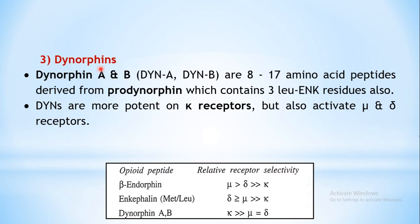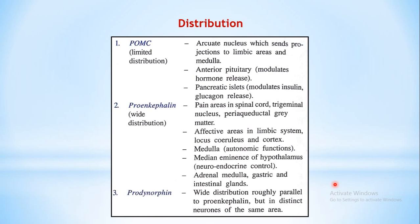The third family is dynorphins. There are two: dynorphin A and dynorphin B. They contain 8 to 17 amino acid peptides and are derived from pro-dynorphin. Apart from giving rise to dynorphins, pro-dynorphin can also generate three molecules of leucine enkephalins. Dynorphins have affinity towards the kappa receptor - unlike the earlier two families which had very weak kappa action. Dynorphins basically interact with the kappa receptor and have very weak mu and delta actions.